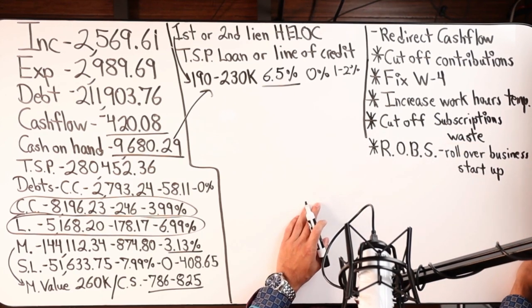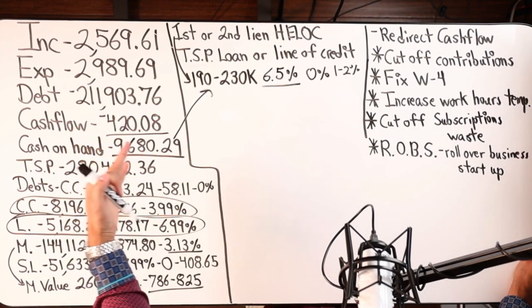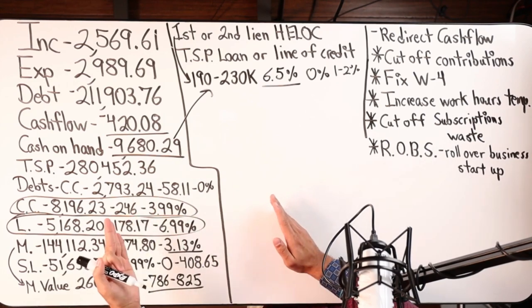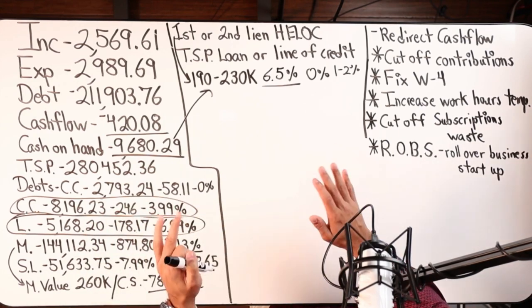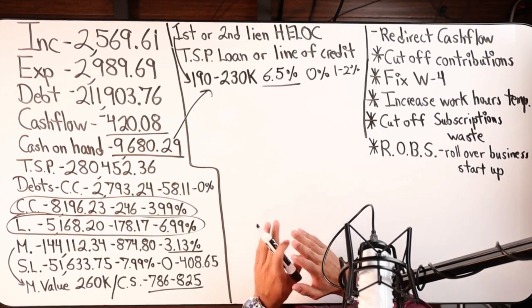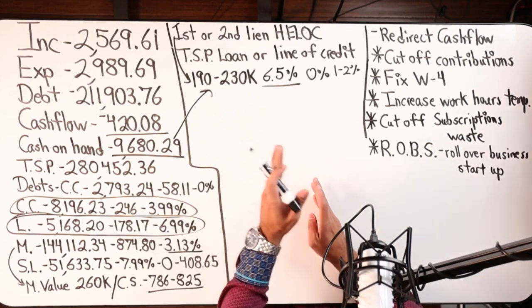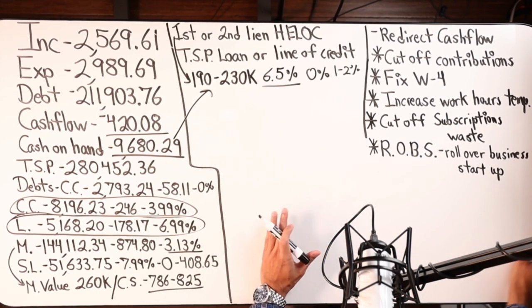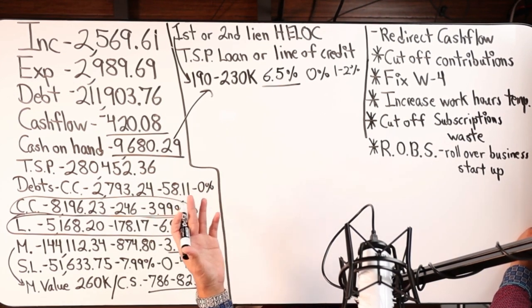Cutting off contributions. If you are someone that is running a negative or like a net zero and you're putting money in a retirement account earning average six, seven, eight percent, whatever your financial advisor tells you. The reality is when you look at the internal rate of return after taxes, inflation, and costs, you're more so netting two to four percent if you're lucky.